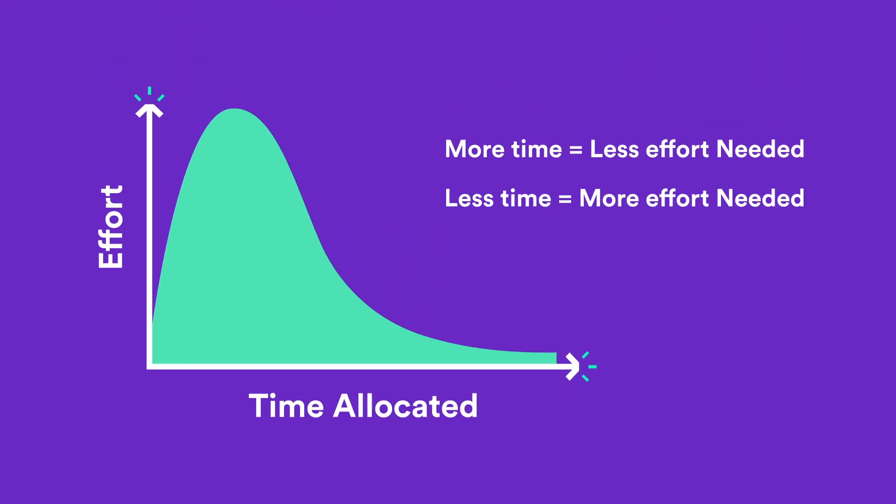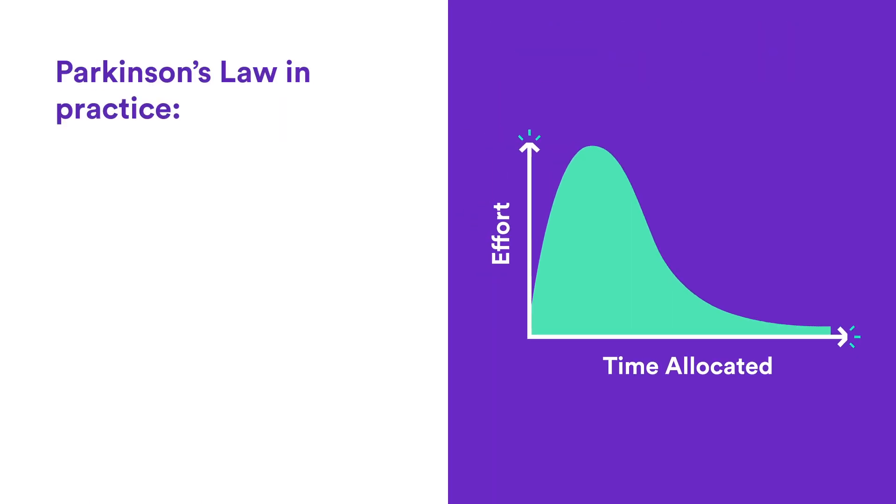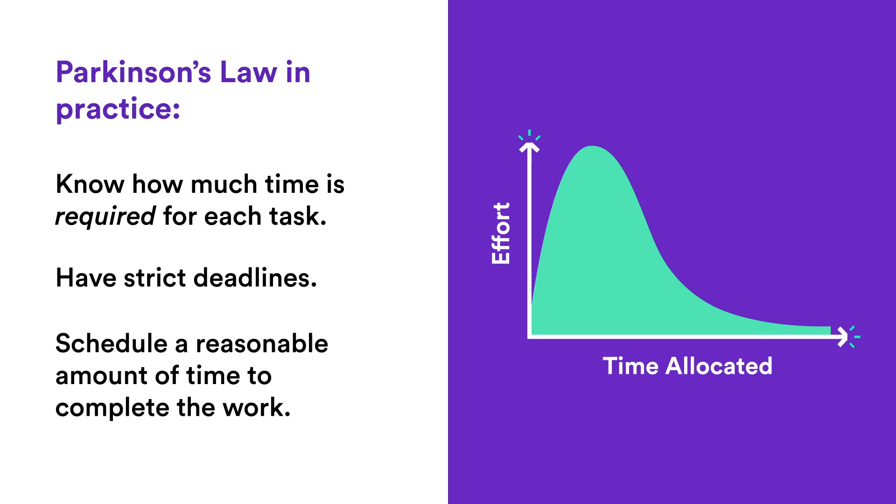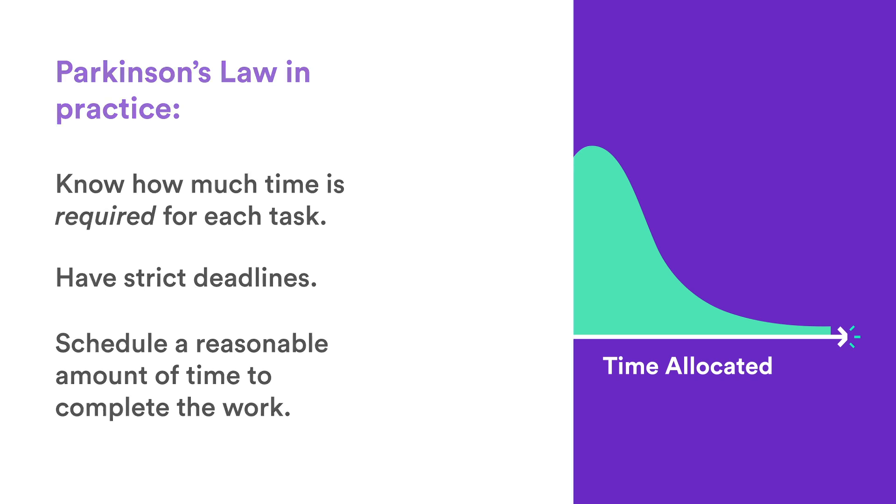The tips we can take from Parkinson's Law are: plan your work with enough detail to know how long is needed to complete the task, make sure that deadlines you set for yourself are more strict than liberal, and give yourself a reasonable but not overly generous time frame to complete the work. And that's it.